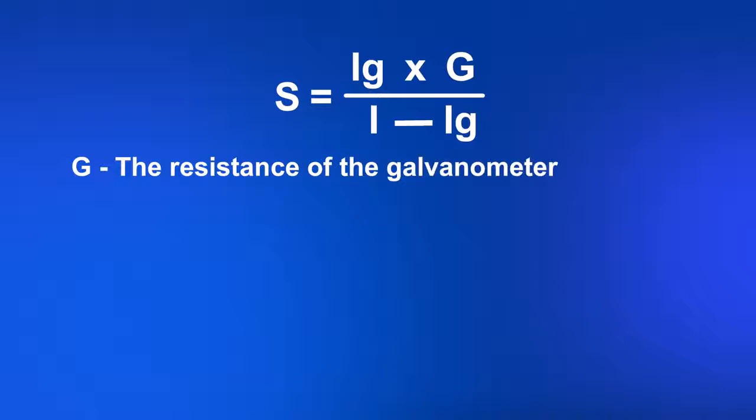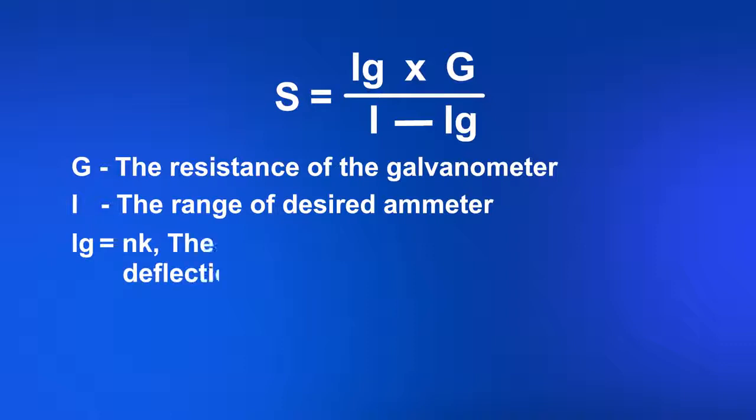G is the resistance of the galvanometer. I is the range of desired ammeter. IG equals NK,